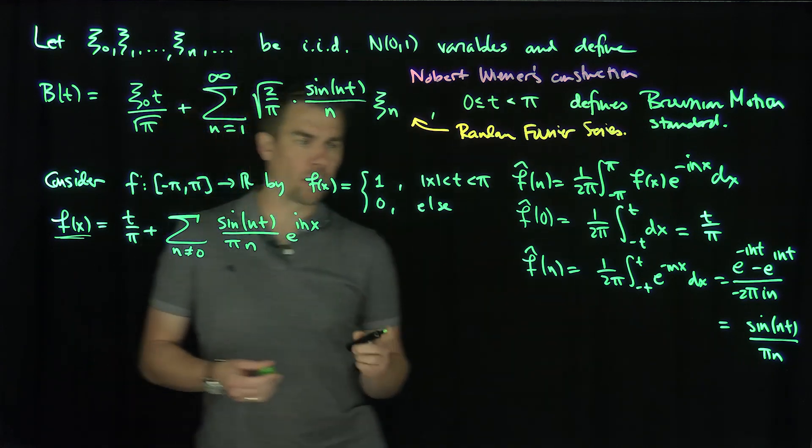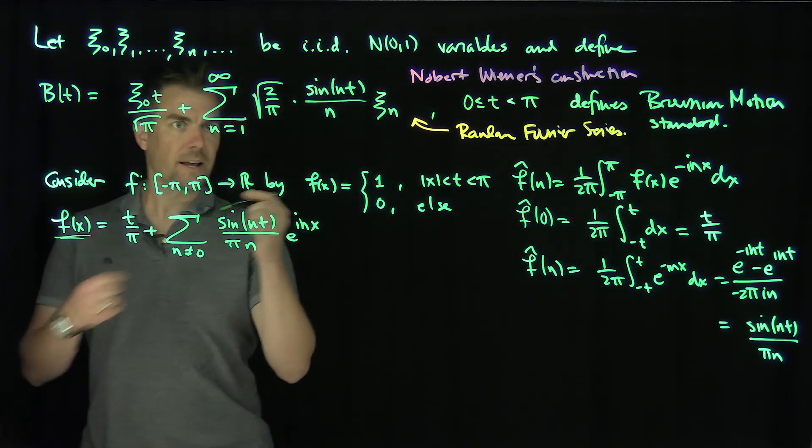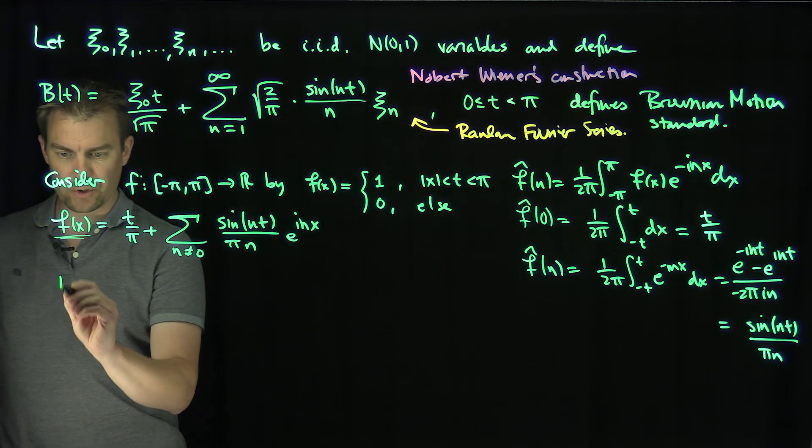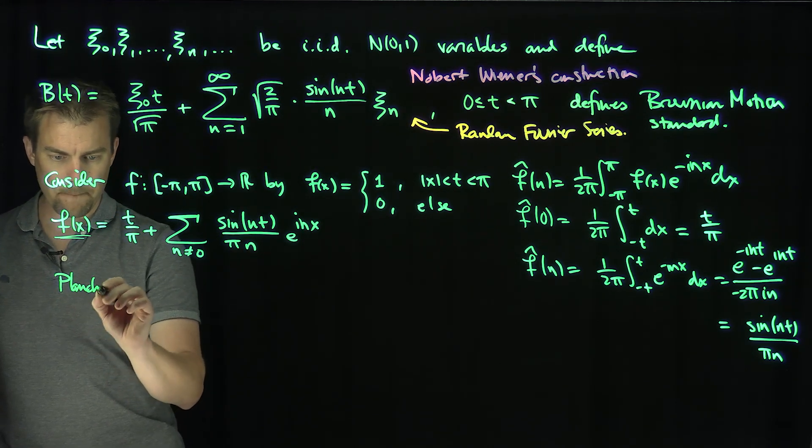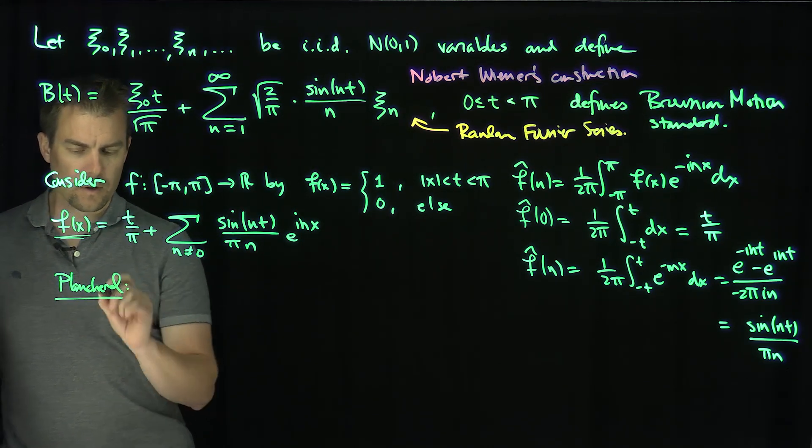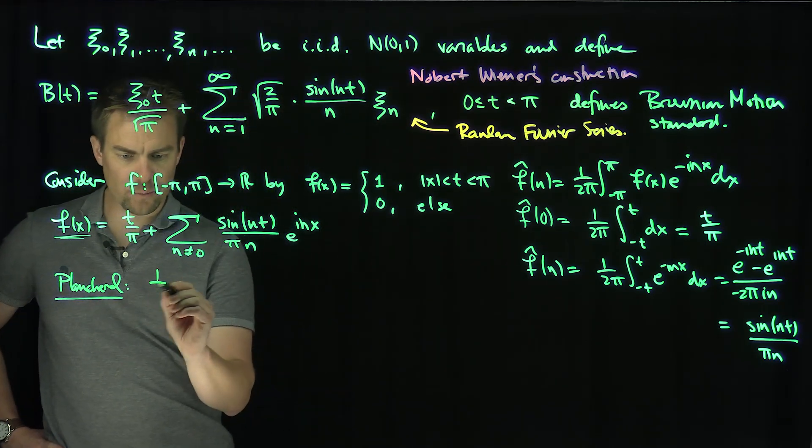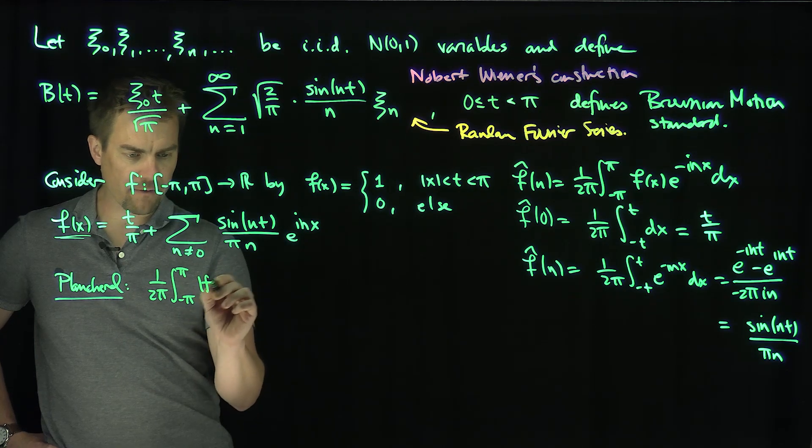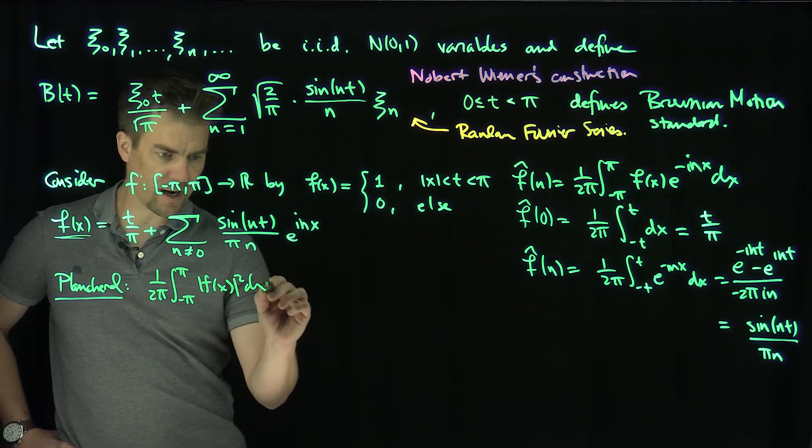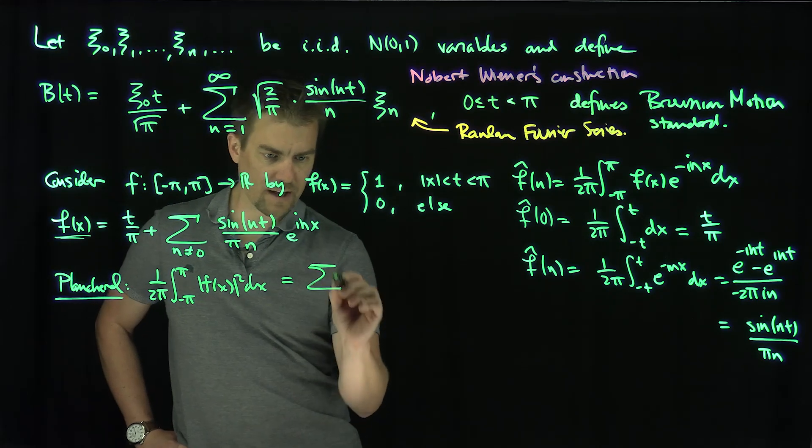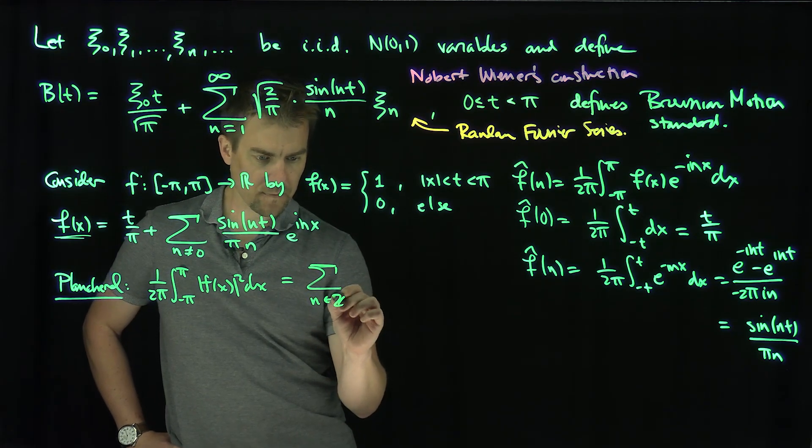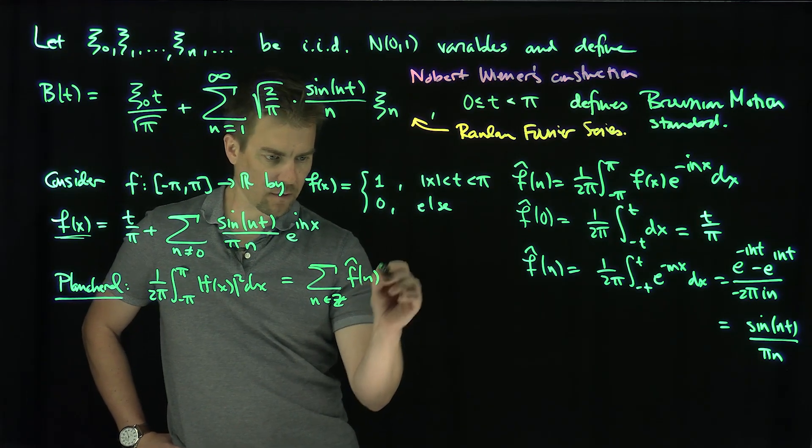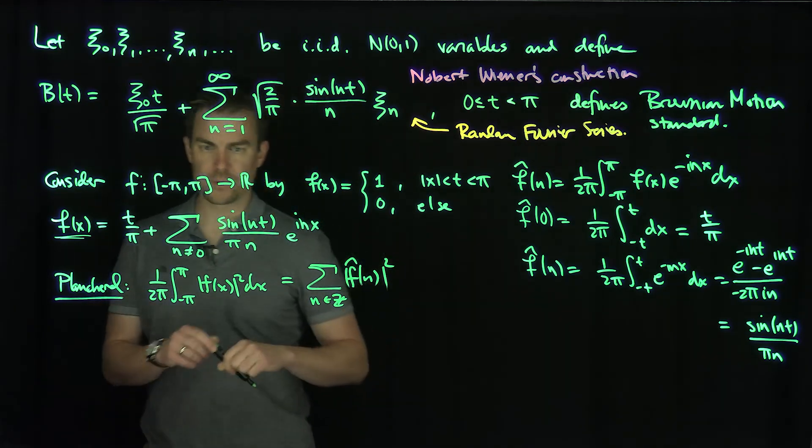So in particular, one thing we know is we know the Plancherel theorem. So let's at least get one of the properties out of the way. We know Plancherel's theorem says that 1 over 2π, the integral from -π to π of f(x)² dx is the sum over n∈ℤ of f̂(n)² quantity squared, the sum of the Fourier coefficients.